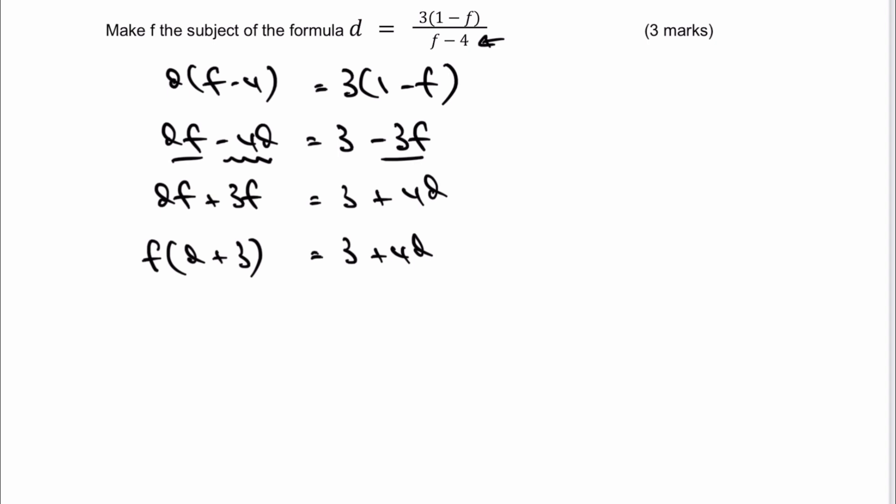And then really, it's just a case of dividing both sides through by d plus 3. So I'm going to get f equals 3 plus 4d all over d plus 3. And that's the answer to that particular question.